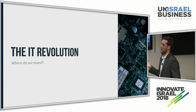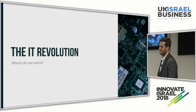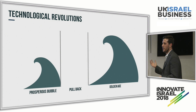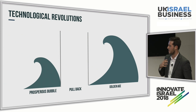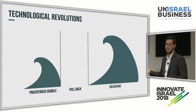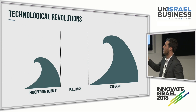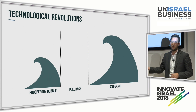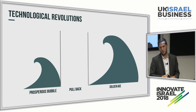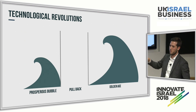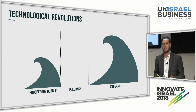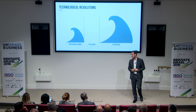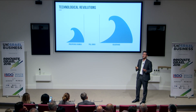I want to start off by talking about the IT revolution and where we really stand in this revolution. If you look historically at how revolutions are generated, generally any technological revolution goes through three different phases. We start with a prosperous bubble, then we go to a pullback phase, and then we go to a golden age. We've seen this with the industrial revolution and with the steel revolution. In the prosperous bubble, we're seeing a new technology emerge and a lot of hype around it — a lot of people investing a lot of capital — but sometimes the technology is simply not evolved enough at that phase.